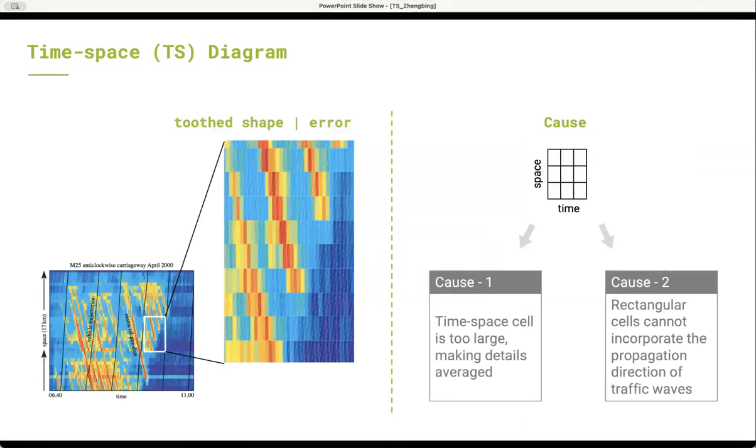Generally speaking, the errors come from the way that we construct the time-space diagram. To construct time-space diagrams, we virtually partition the time-space plane into homogeneous cells, and then fill the cell with colors that are determined based on the traffic states of the cell.